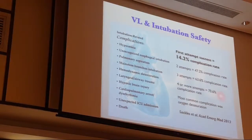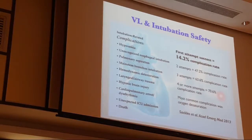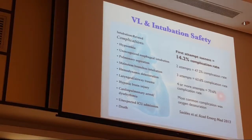Intubation-related complications matter greatly in my practice, where patients are usually very critically ill. The main complication that is going to kill the patient is hypoxemia. Others include unrecognized esophageal intubation — more so in a pre-hospital or ambulance setting — right main bronchus intubation, pulmonary aspiration, and hemodynamic deterioration. Later we'll talk about a concept called 'peri-intubation killers' — before you intubate a patient, you want to make sure you prevent these.